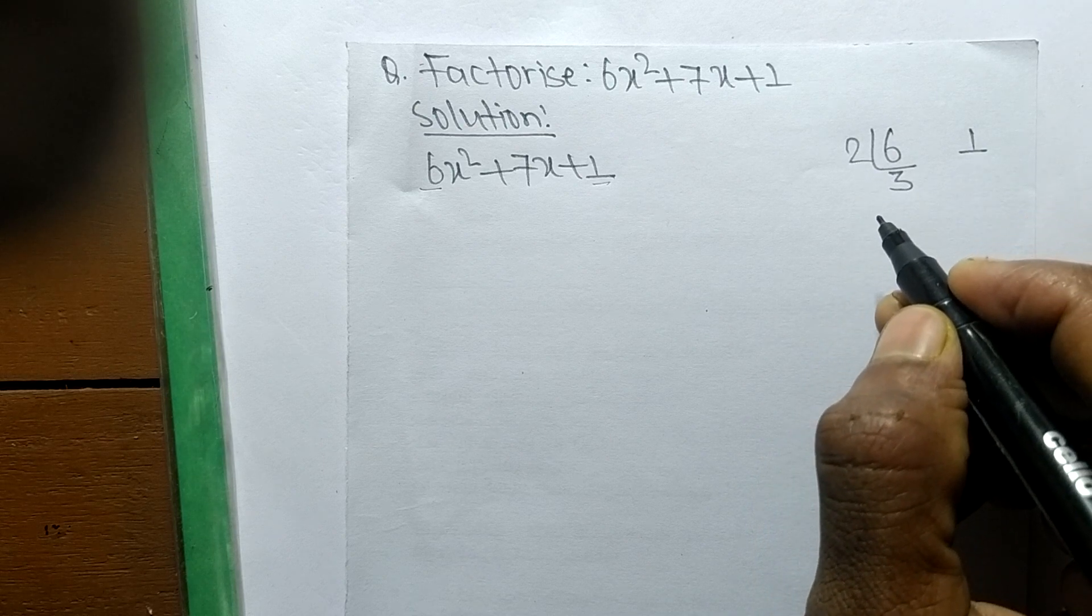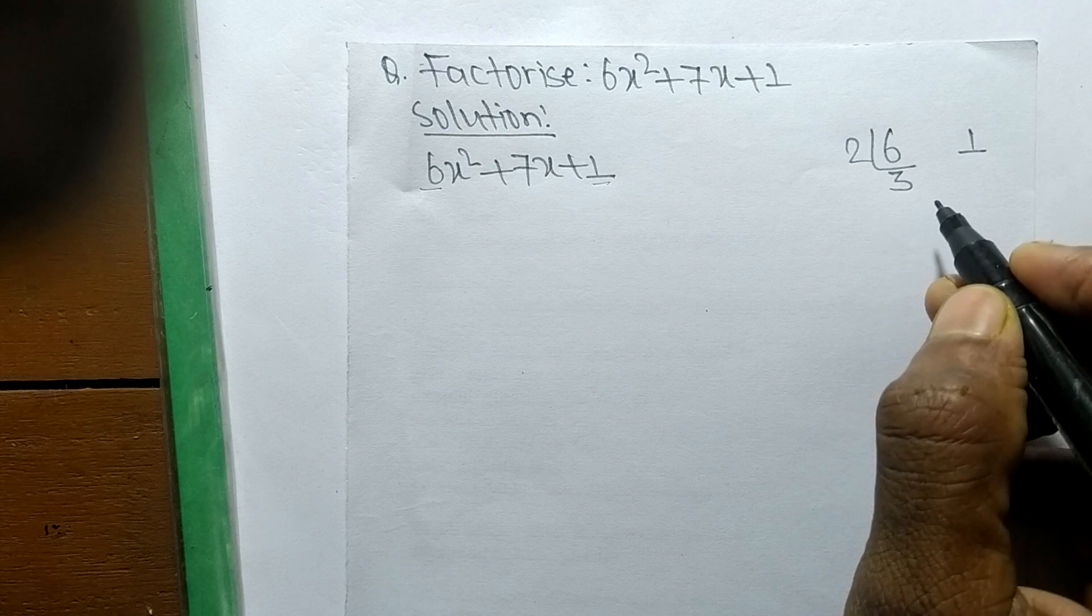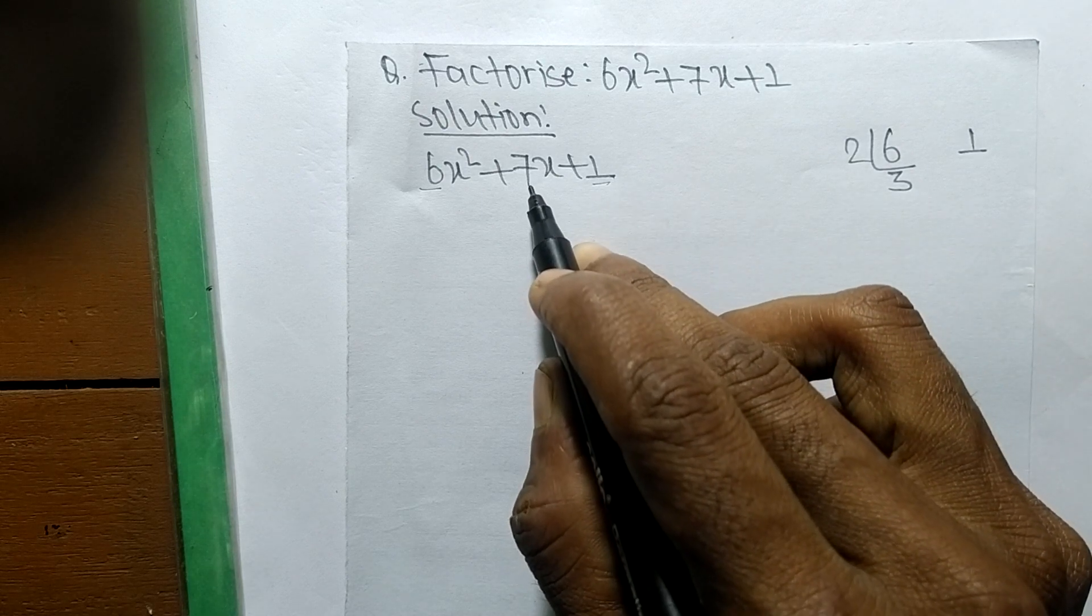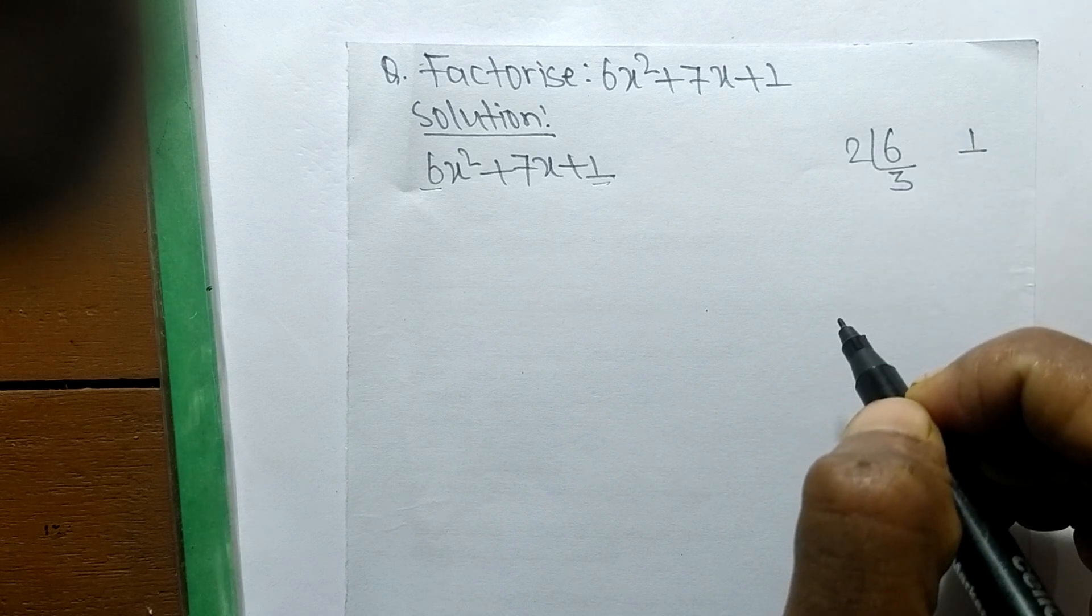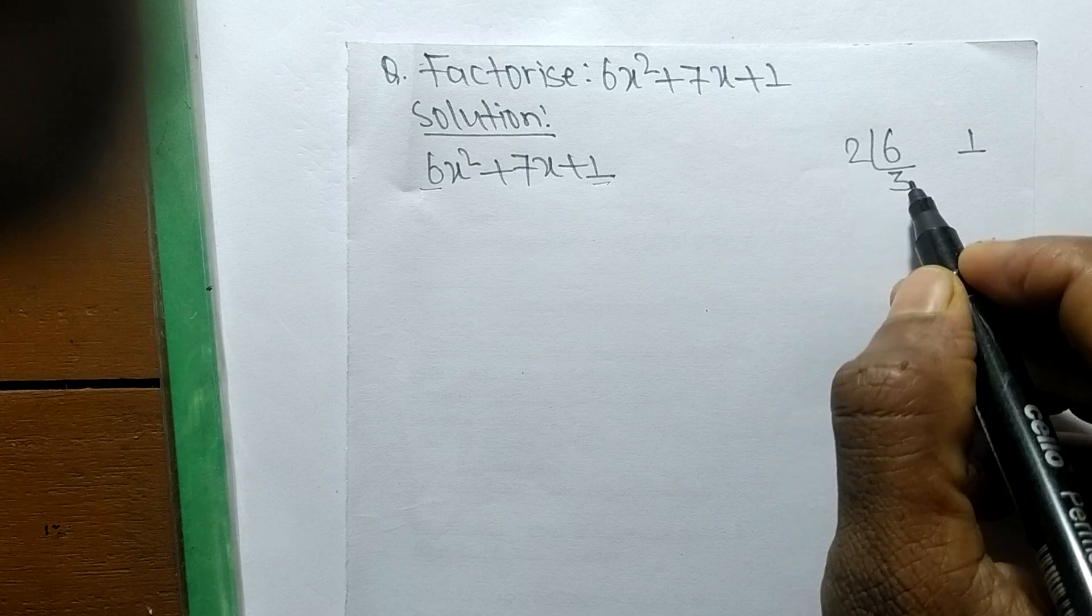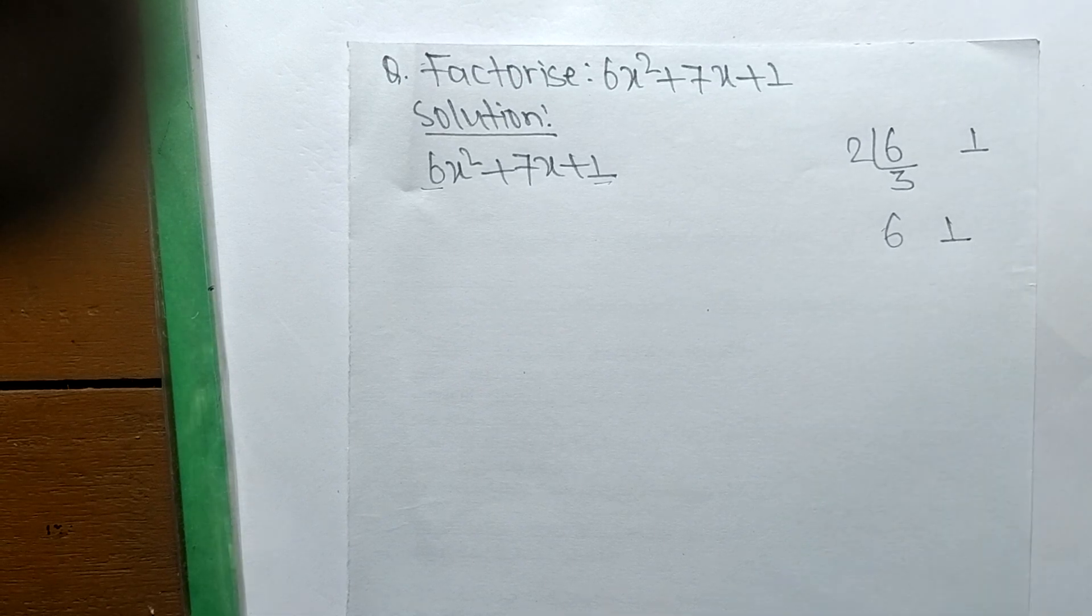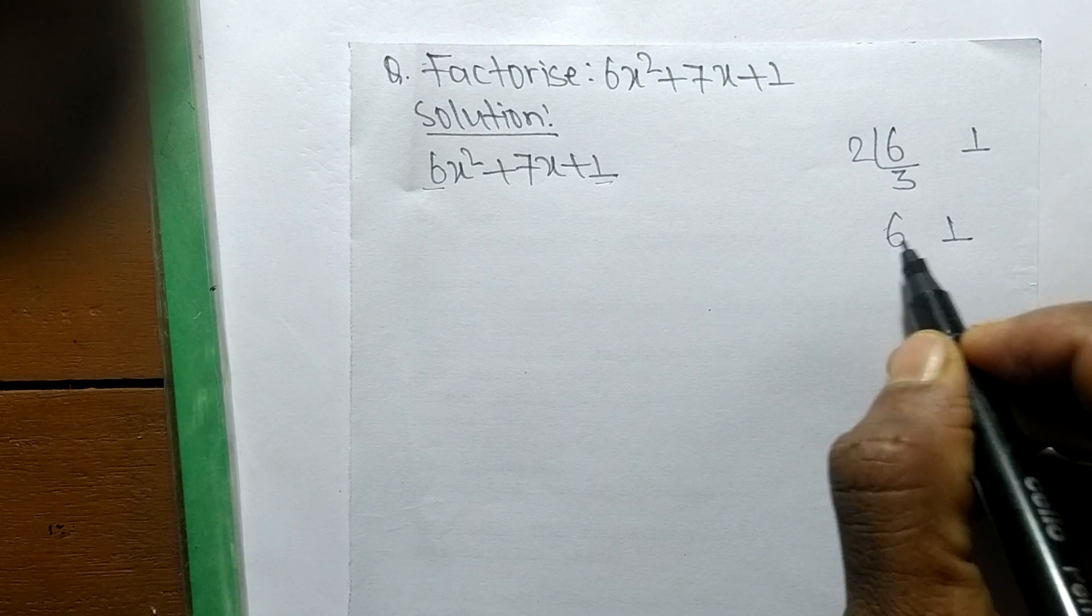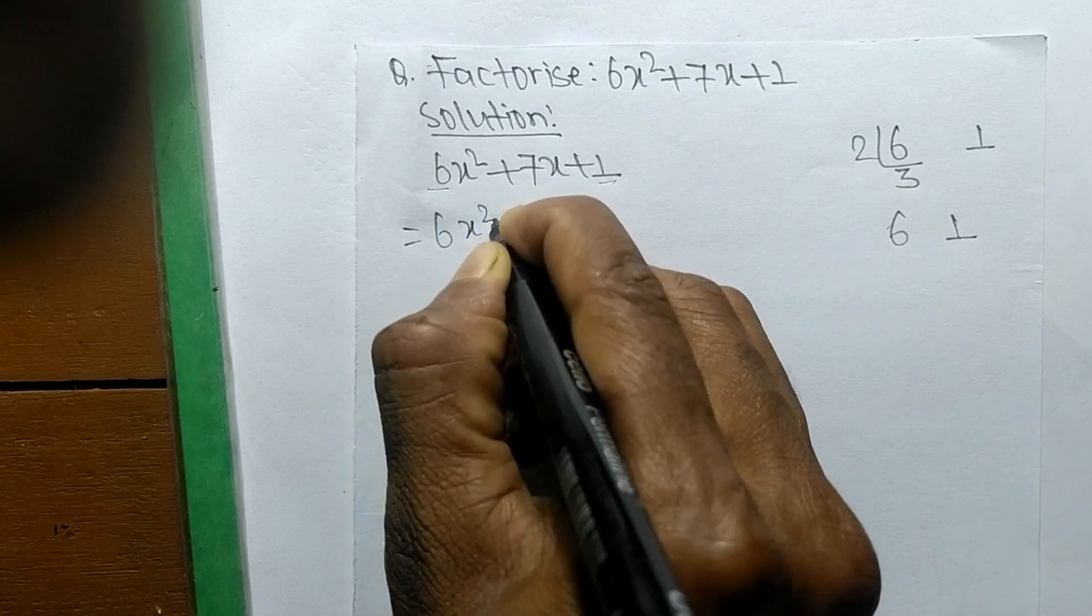Now from these numbers we have to find such numbers that by adding we get the middle number and by multiplying within these numbers. When we multiply 2 times 3 we get 6, and the number is 1, so 6 + 1 equals 7. So we can write it as 6x² + 6x + x + 1.